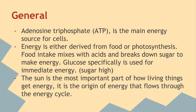Adenosine triphosphate, or ATP, is the main energy source for cells. Energy is either derived from food or photosynthesis. Food intake mixes with acids and breaks down sugar to make energy. Glucose, specifically, is used for immediate energy — this is also known as a sugar high.